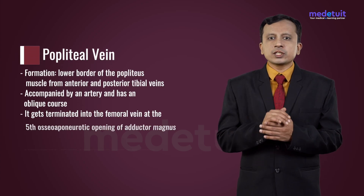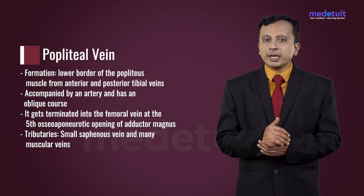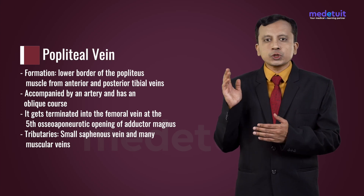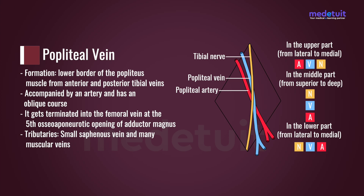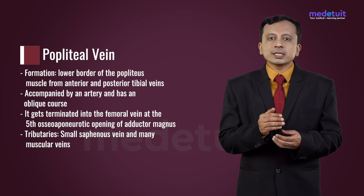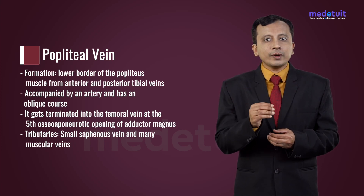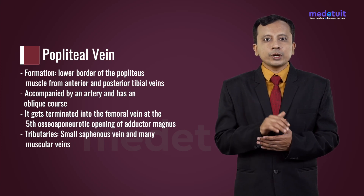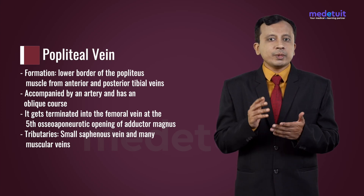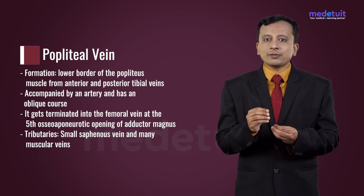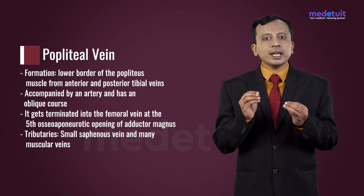The popliteal vein is formed at the lower border of the popliteus muscle from the anterior tibial vein and posterior tibial vein. It is accompanied by the artery and has an oblique course. In the upper part, the vein is related posterolateral to the artery; in the middle part it crosses superficially; and in the lower part it comes towards the medial side. It terminates into the femoral vein at the level of the fifth osteoporotic opening of the adductor magnus. It has many tributaries, including the small saphenous vein and various muscular veins draining into it.